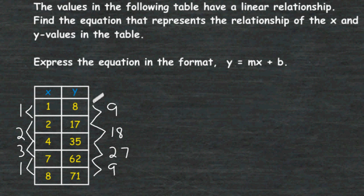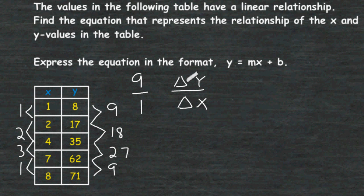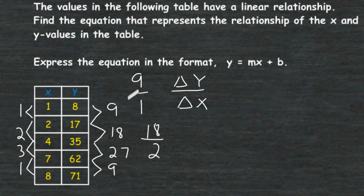If you take the first change in y compared to the first change in x, we can express that as a ratio of 9 over 1. The m value should be expressed as the change in y over the change in x — this symbol is called delta, which stands for change. The second change was 18 over 2, which reduces to 9 over 1. Similarly, 27 over 3 also simplifies to 9 over 1.